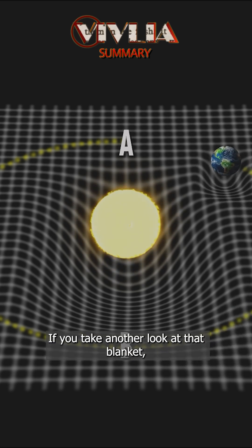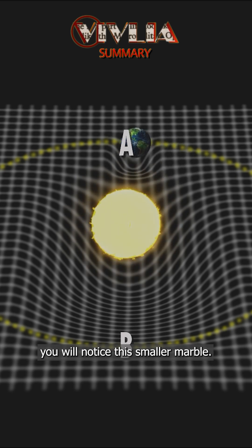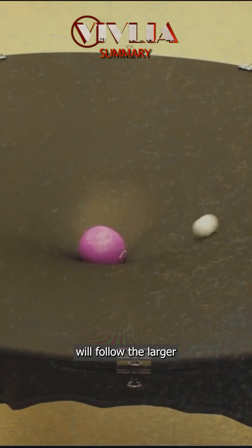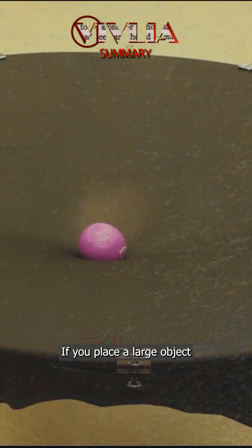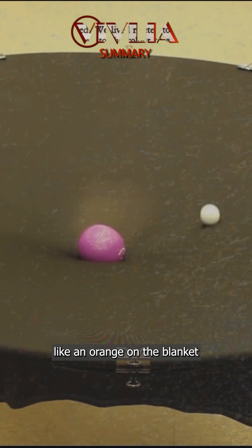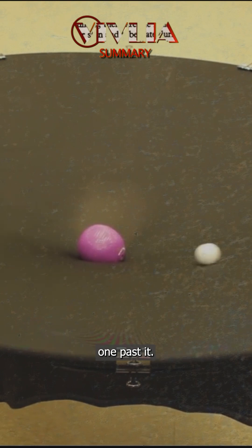If you take another look at that blanket, you will notice this. A smaller marble, for example, will follow the larger marble's indentation if you place a large object like an orange on the blanket, and then try to roll a smaller one past it.